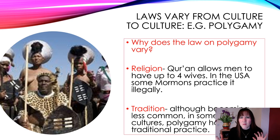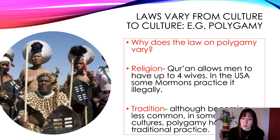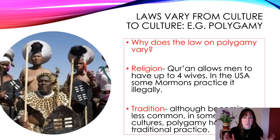Why does the law on polygamy vary over different cultures? It could be based on two different reasons. First, religion — the Quran allows men to have up to four wives. In the USA, some Mormons practice it illegally; it used to be legal but was then made illegal. There's a TV programme called Sister Wives about a Mormon family with multiple wives. Second, tradition — although becoming less common, polygamy has been a traditional practice in some African cultures.